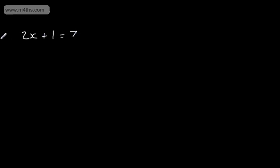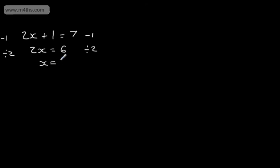Let's look at an example of what we looked at before. With an unknown on one side, we could, for example, have 2x plus 1 is equal to 7. We saw in the last video that we would subtract 1 from both sides of the equation. That would give me 2x is equal to 6. Then we would divide both sides by 2, and that would give me x is equal to 3. So we solve the equation for the unknown, which is x.